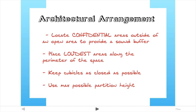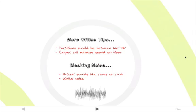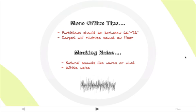Locate confidential areas outside of the open area to provide a buffer, then place the loudest areas at the perimeter, far from the confidential areas. Try to keep individual office cubicles as enclosed as possible with the maximum possible partition height. Partitions must be high enough to block direct line-of-sight voice transmissions — not lower than 65 inches, but preferably between 66 and 72 inches.